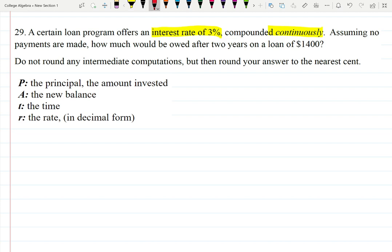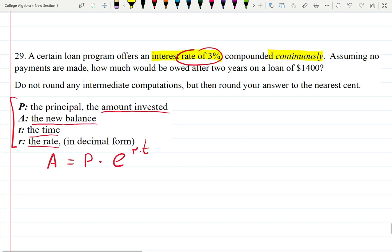This is the finance problem. A certain loan program offers an interest rate of 3% which is compounded continuously. This is already enough to start writing down a formula. The formula for this case is A which is a new balance equals P which is principal times e raised to the rt. I gave you a box over here which explains that P is the principal or basically the amount invested, the initial amount you put in the bank. A is new balance, t is time, and r is rate in decimal form. We don't want to have 3% rate, you always divide by 100. 3% divided by 100% is 0.03. So r is 0.03.